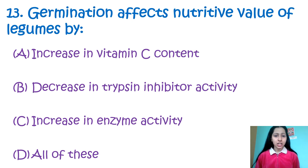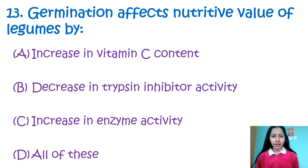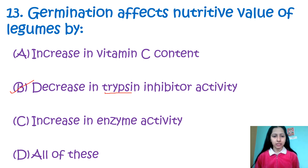Question 13: Germination affects nutritive value of legumes by — A: increase in vitamin C content, B: decrease in trypsin inhibitor activity, C: increase in enzyme activity, D: all of these. When a seed germinates, it decreases the trypsin inhibitor activity, while other nutritive contents increase. So the correct answer is option B — decrease in trypsin inhibitor activity.